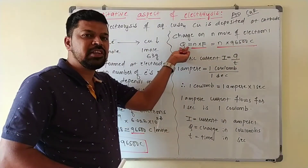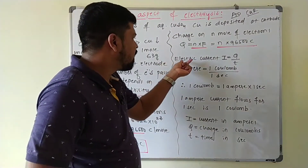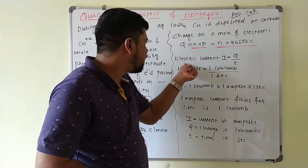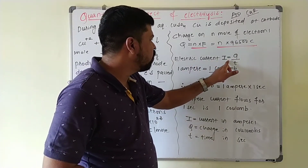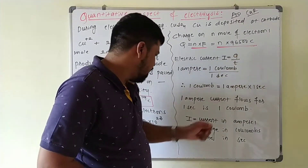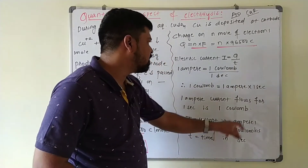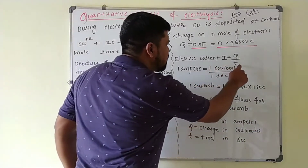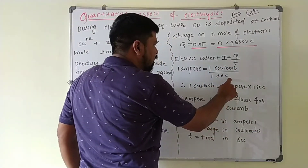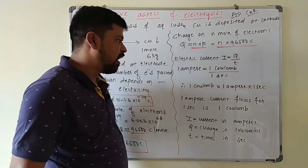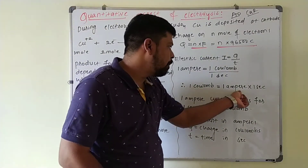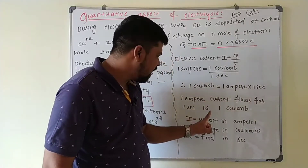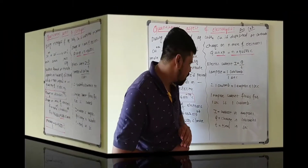This charge Q is calculated from the strength of the current I and the time T for which electricity is passed. Electric current: I = Q / T, where I is current in amperes, Q is charge in coulombs, and T is time in seconds. If one coulomb of charge flows for one second, that equals one ampere of current. Therefore, one coulomb = one ampere × one second.